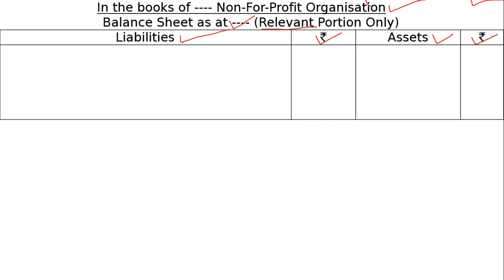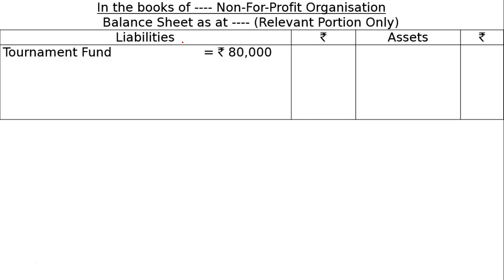The first part – Tournament Fund is a liability. It goes on the liability side. So we write: Tournament Fund Rs. 80,000. If you have any receipts related to the tournament, those will be added to this fund.